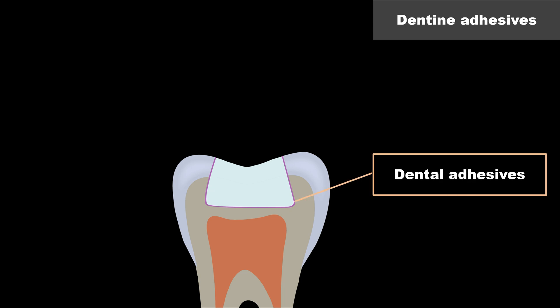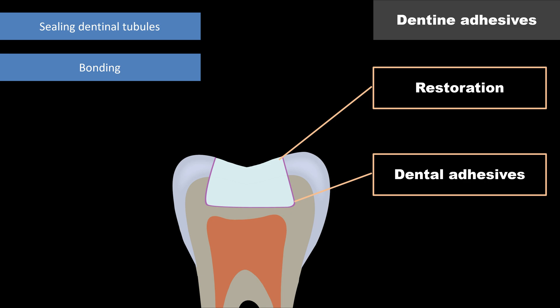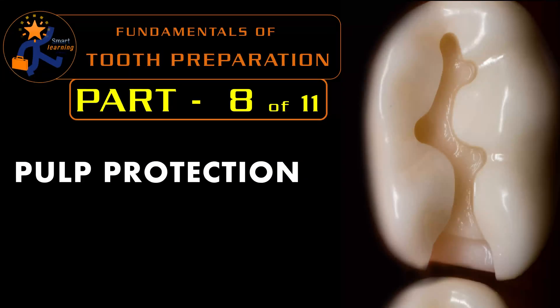Finally, dentine adhesives, also known as dentine bonding agents, are commonly used below composite restorations. They seal the dentinal tubules and provide bonding. All dentine bonding agents used for bonding composite restorations also act as protective agents. Thus, we have seen the ways the pulp can be affected by different insults during tooth preparation and the strategies for protecting the dental pulp: bases, liners, cavity varnishes, sealers, and dentine adhesives. The next part will be covered in the coming video.